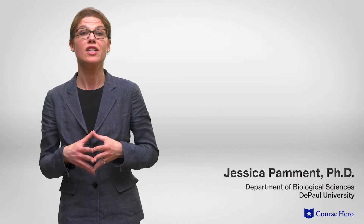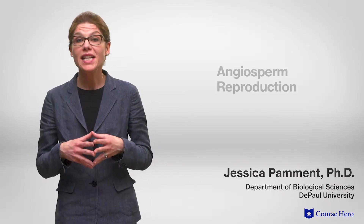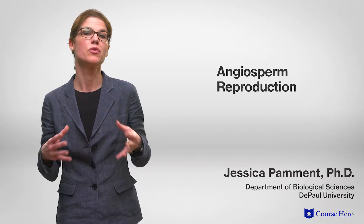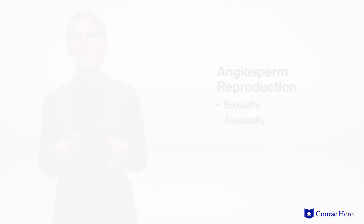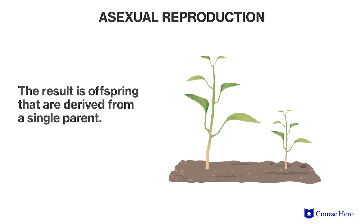Unlike humans that can only reproduce sexually, many angiosperms can reproduce both sexually and asexually. Asexual reproduction results in offspring that are derived from a single parent, resulting in parents and offspring that are genetically identical to each other, also known as clones.